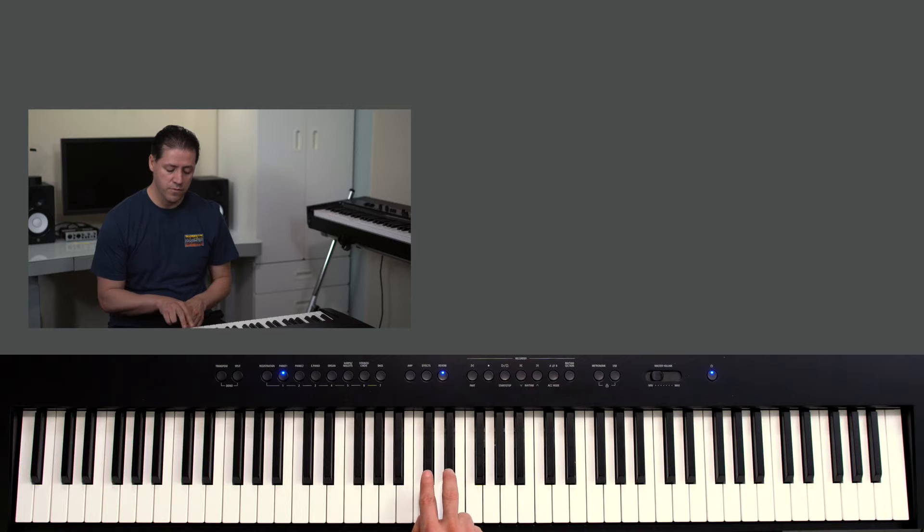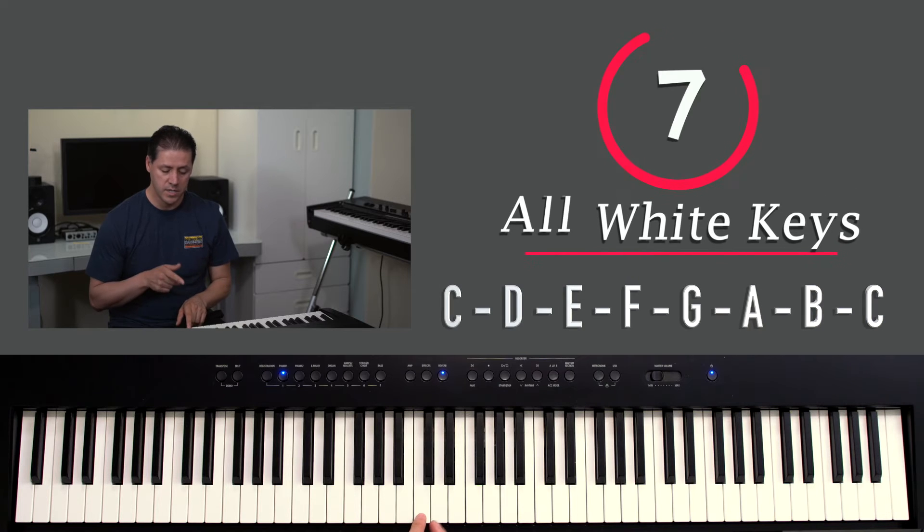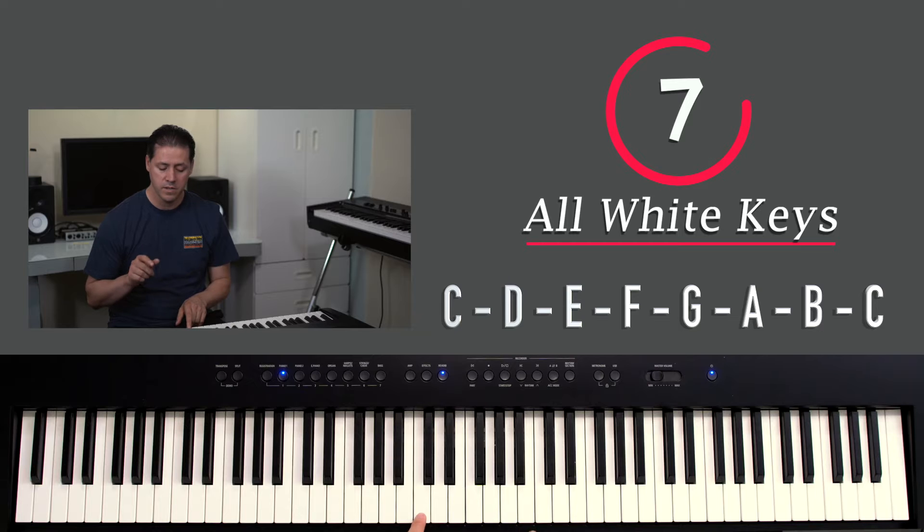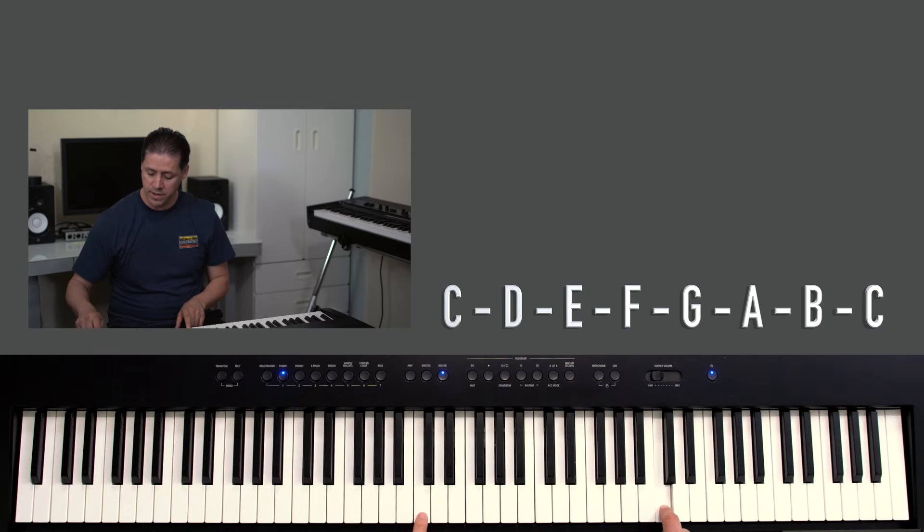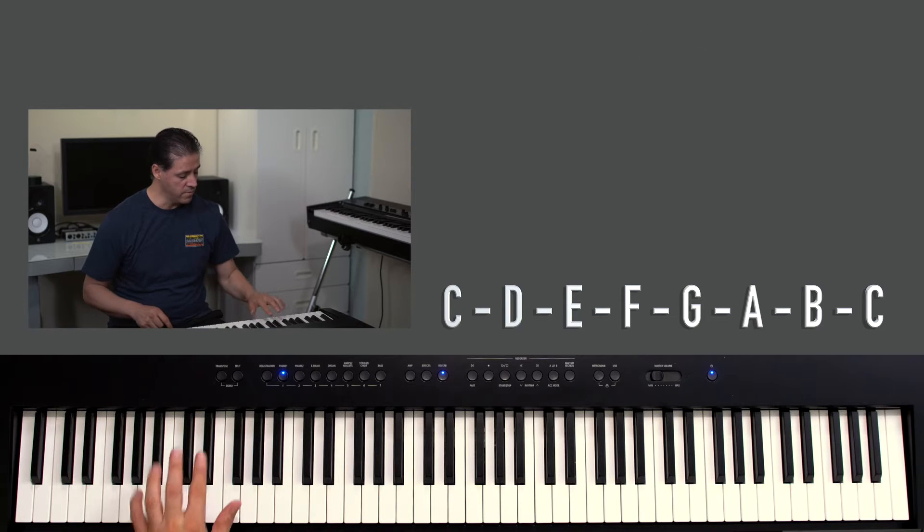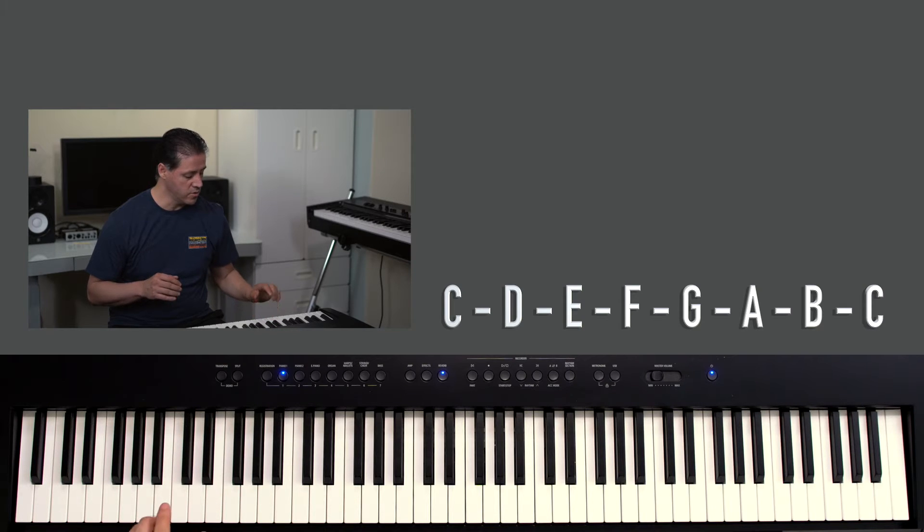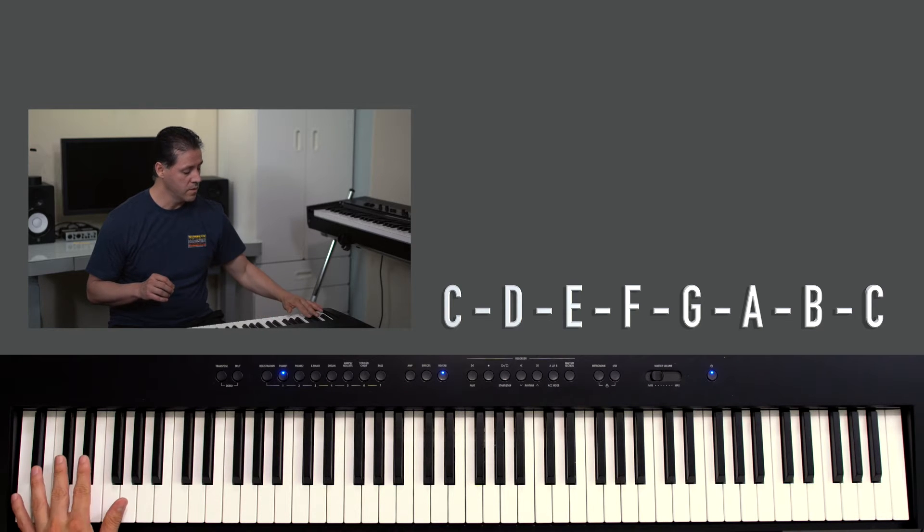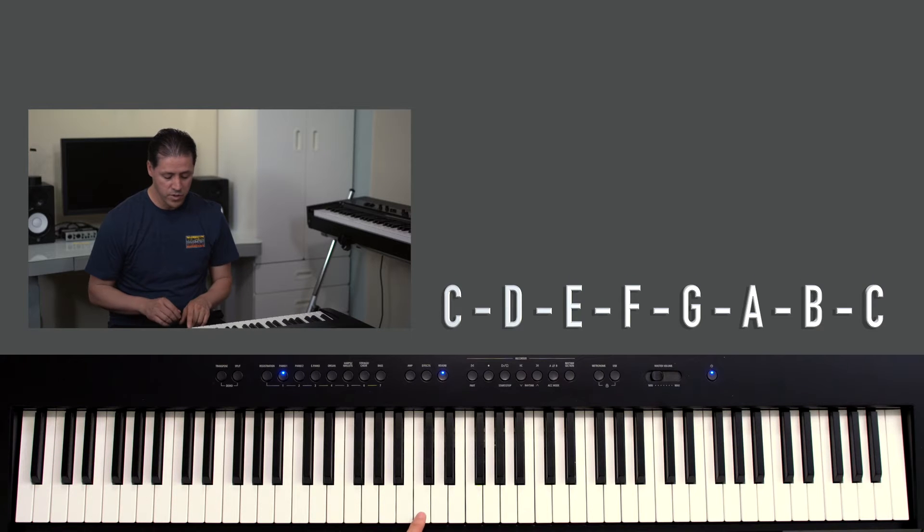If we see the group of two black keys, to the left the first note to the left is C. C, D, E, F, G, A, B, and C, it just keeps repeating after that. So the first note you're going to memorize is C. Find it all over the piano, find it here, find it here, find it all over the piano. Visualize, it's very important that you visualize the first two black keys, so that way you are 100% certain that this note is C.